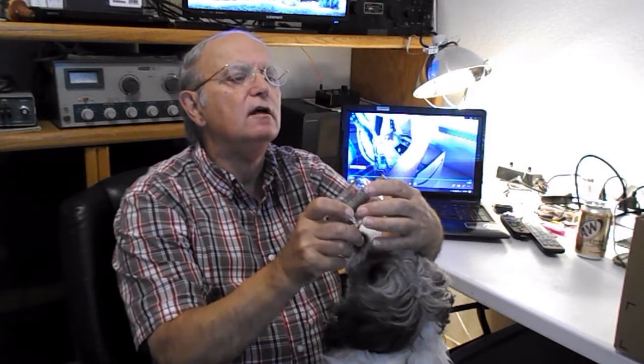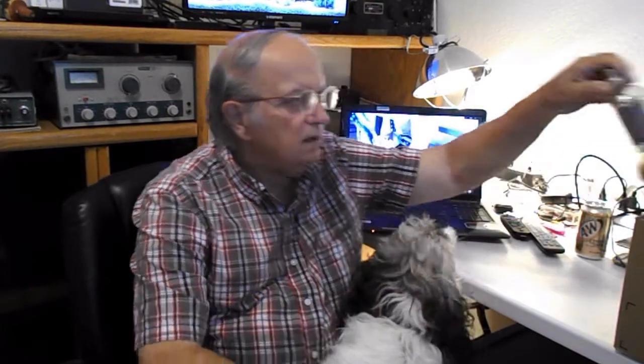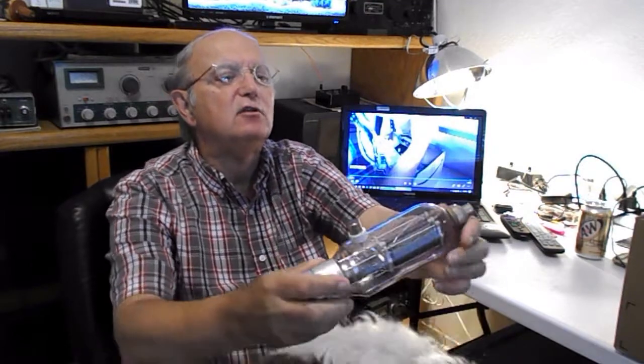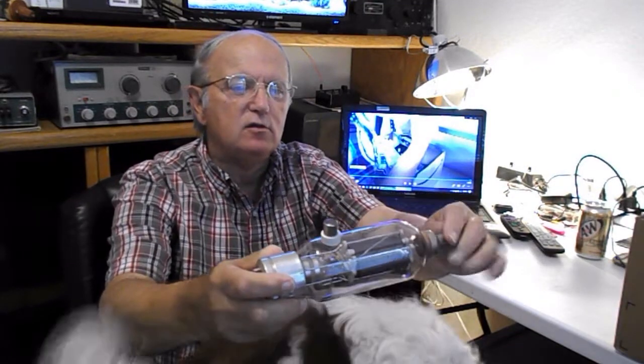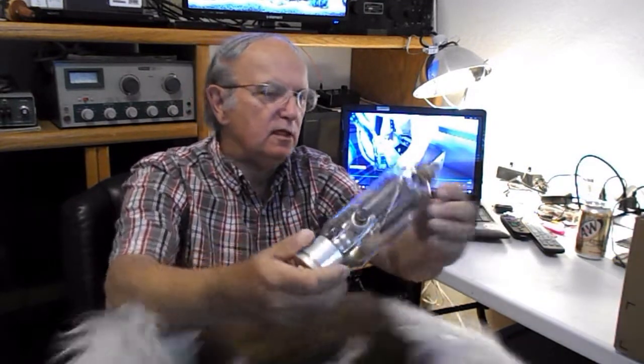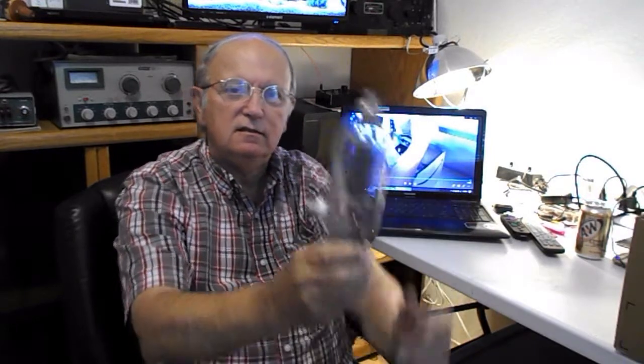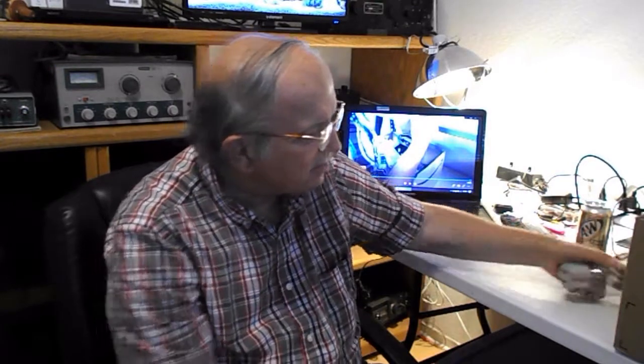This is a small transmitting tube. This is a rather large 810 transmitting tube. Notice these are for the high voltage parts where it goes, the plate. And try to figure out what that sucker is worth.